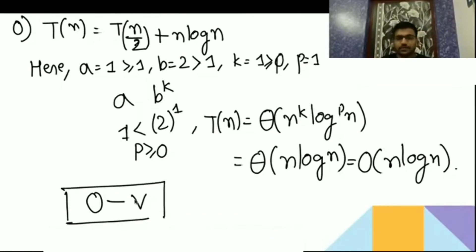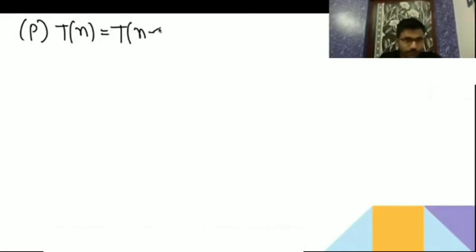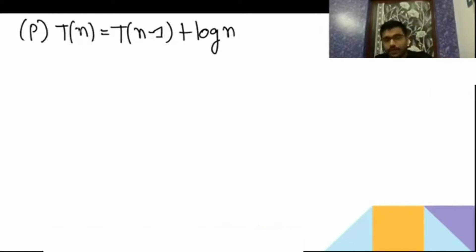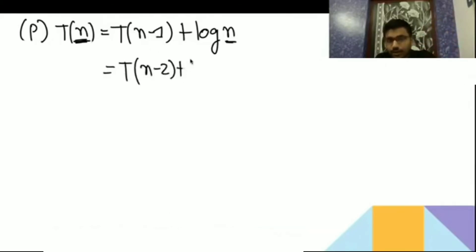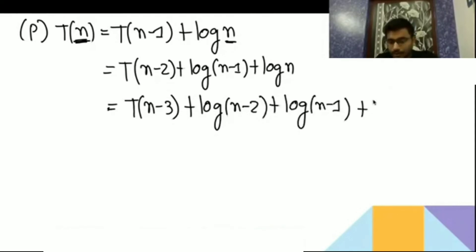Now P is a little bit difficult. P is saying T(n) = T(n-1) + log n. Now try to solve this. It is decreasing by one, so T(n-1) = T(n-2) + log(n-1). Then T(n-2) = T(n-3) + log(n-2), then log(n-1), then log n.